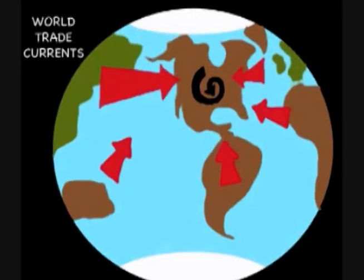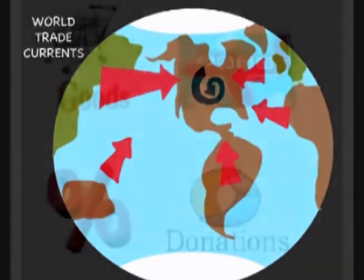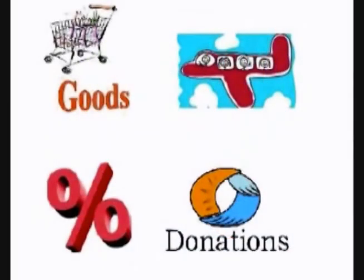It includes goods, services, income, and current transfers. Goods include general merchandise, goods used for processing other goods, and non-monetary gold. Services include transportation, business services, and tourism.